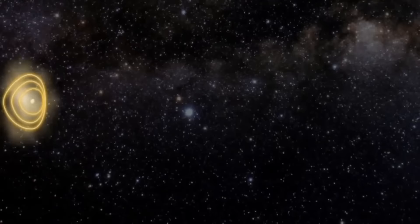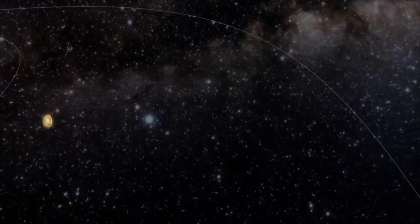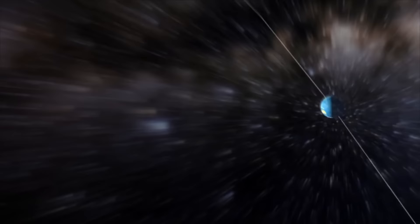Unbeknownst to him, what he'd just witnessed was a massive eruption on the sun's surface, known as a coronal mass ejection. Normally, it takes days for a corona mass ejection to reach Earth, but this one took a mere 17 and a half hours to traverse the vast expanse between the sun and our planet.